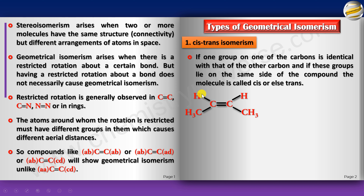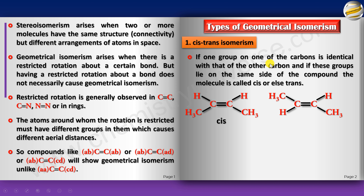Consider 2-butene: H and CH3 on each carbon are different, so it has a geometrical isomer. When the two H's are on the same side and the two CH3 groups are on the same side, this is the cis isomer. When the CH3 groups are on opposite sides and the two hydrogens are apart, that is the trans isomer. The energies differ for these two, giving cis and trans forms.